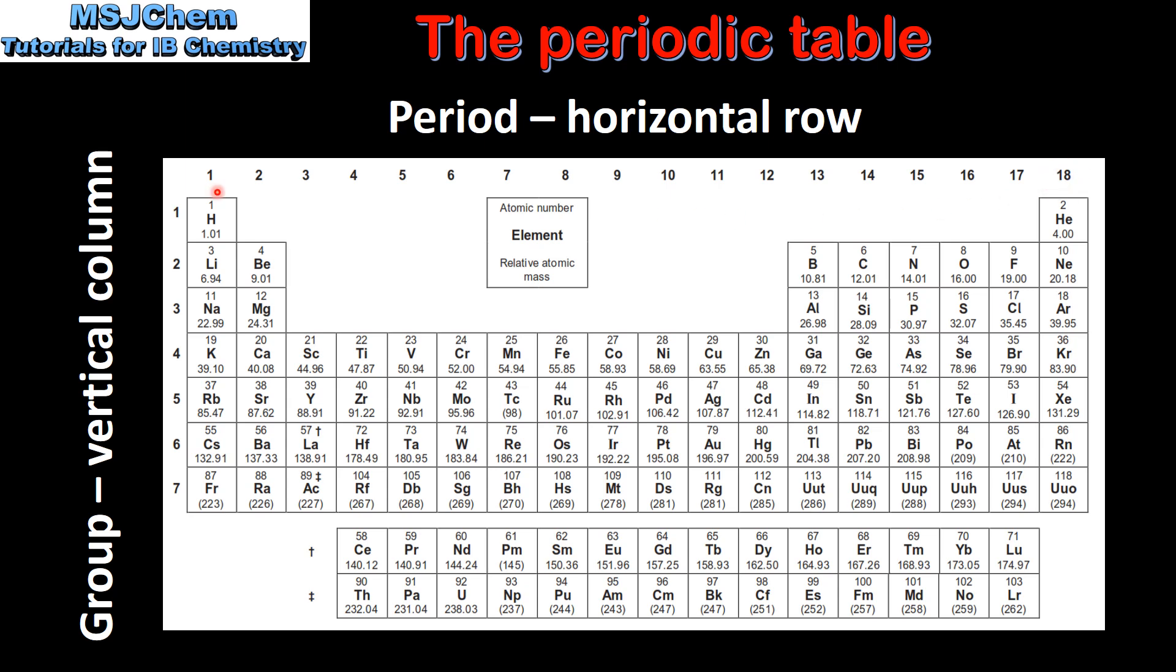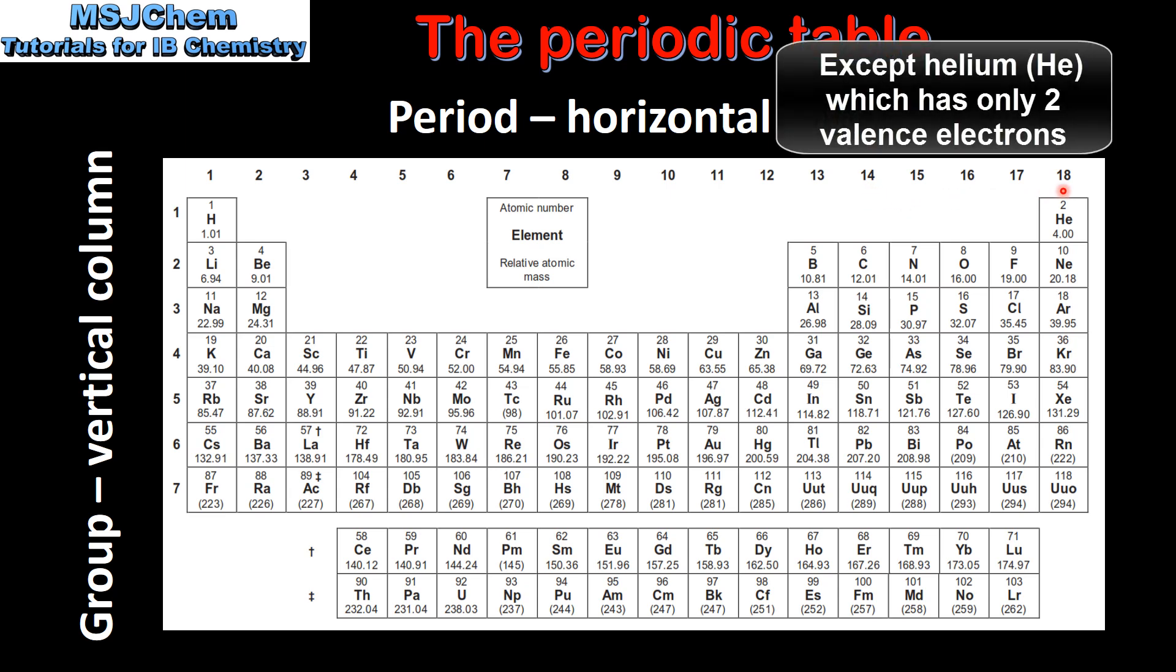The group number tells us the number of electrons in the outer energy level, which are known as valence electrons. All the elements in group 1 have 1 valence electron. In group 2 all the elements have 2 valence electrons. In group 13 the elements have 3 valence electrons, group 14 4 valence electrons and so on until group 18 in which all the elements have 8 valence electrons.